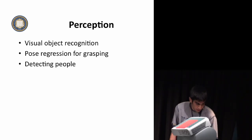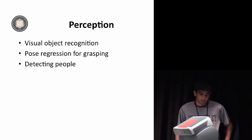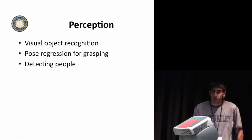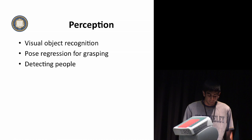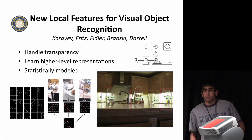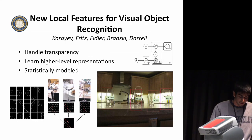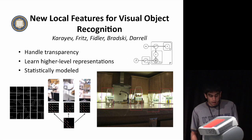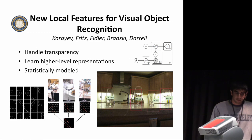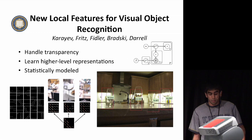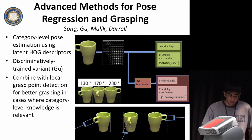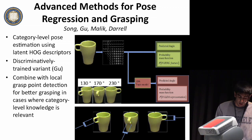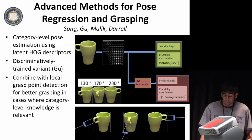The next main goal for us is perception, and we're focusing on visual object recognition, pose estimation for grasping, and detecting people. An example of the work we're doing in visual object recognition is handling transparent objects. Those are hard because the image patches containing transparent objects are dominated by the background, which causes typical methods for object detection to fail. Using an LDA method on gradient statistics such as SIFT or HOG descriptors, we can detect these objects reliably.